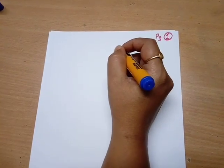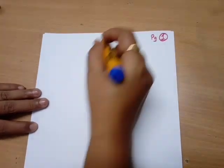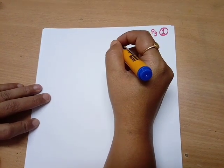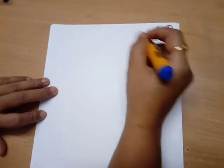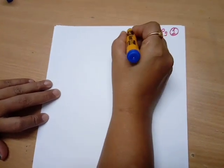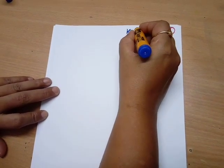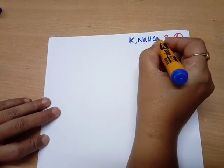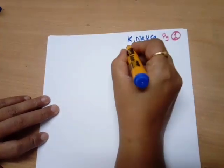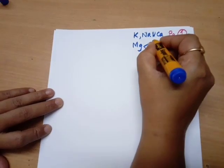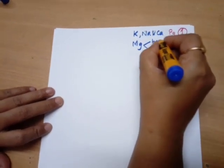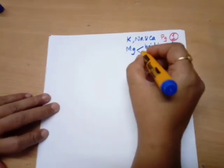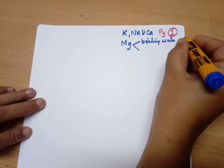Let us discuss what we have done in yesterday's class. We have seen the action of water on the following metals. We studied the action of water with potassium, sodium, and calcium — they react with water in cold conditions — whereas magnesium reacts with boiling water and produces hydrogen, forming magnesium hydroxide.